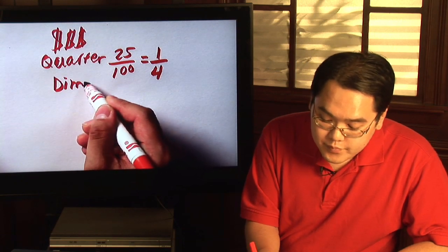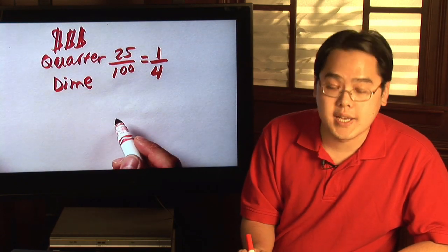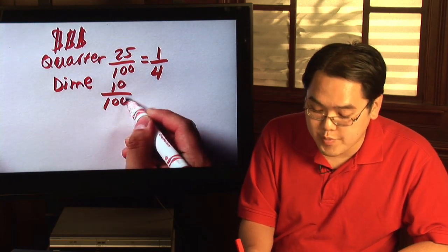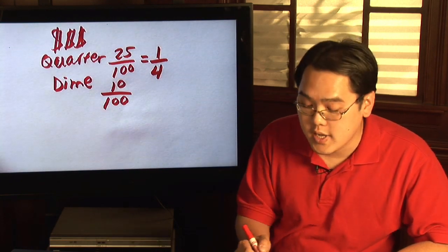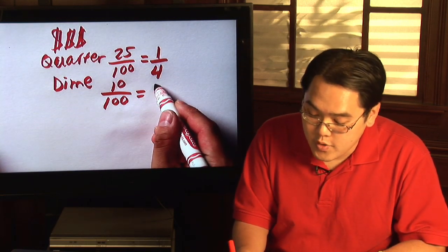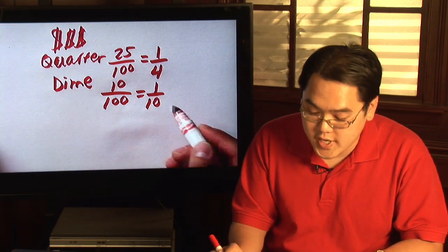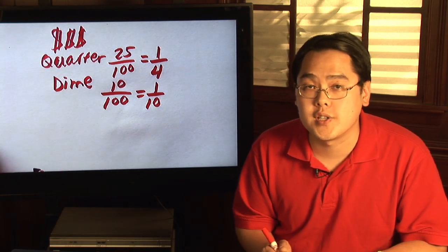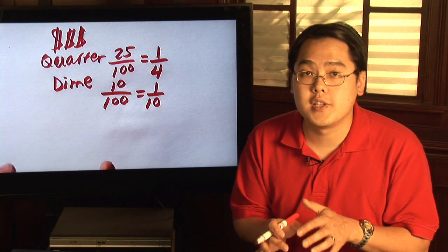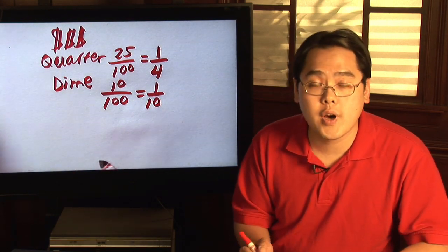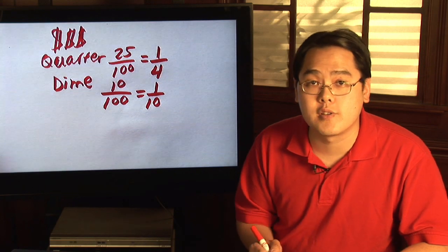Same thing with a dime. A dime is ten cents out of a possible hundred because for every hundred cents there's a dollar, and then you could reduce the fraction from ten over a hundred to one over ten. You can repeat that for all other coins in U.S. currency. Show them it's a number over a hundred and then reduce if possible to other denominators. So that's a simple way to learn fractions.